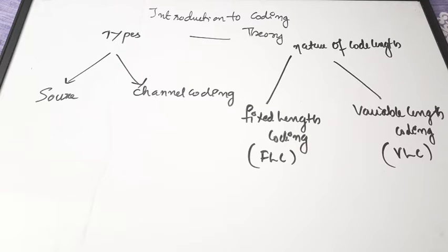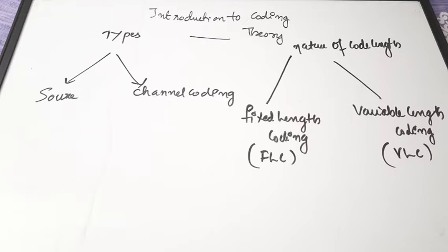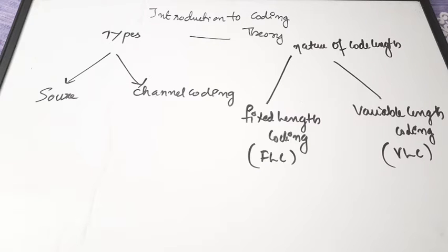Based on the length of the code word generated, we can categorize coding as fixed length coding and variable length coding. This is the main topic of this video. Fixed length coding means the code word generated for every symbol will have a fixed length, whereas variable length coding means the various symbols will have code words with different lengths. First we will see fixed length coding, then variable length coding.